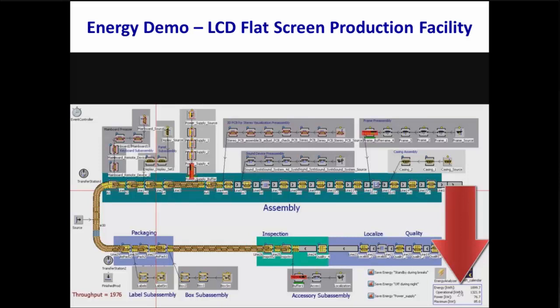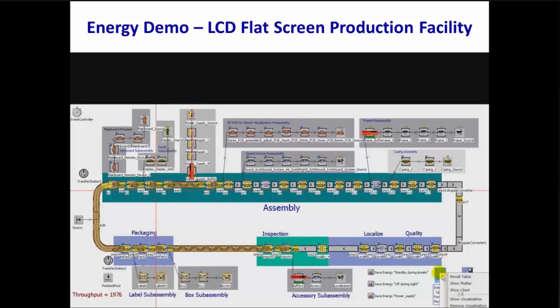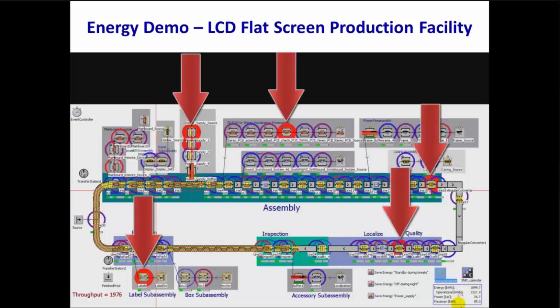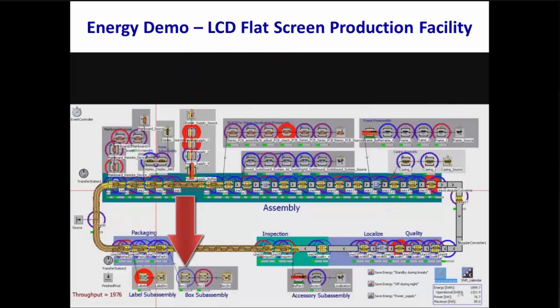Let's look at the Energy Analyzer's Show Visualization option. Stations surrounded by solid red circles are the ones that consume the most energy. Hollow red circles indicate the next largest energy consumers. Blue indicates the least energy consumers, and purple is in between. This visualization lets you quickly identify areas where you may want to focus on making potential individual energy improvements, similar to using PlantSim's Bottleneck Analyzer to identify the main throughput bottlenecks.